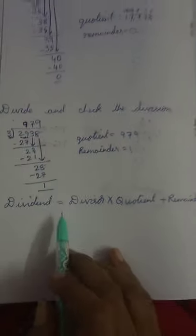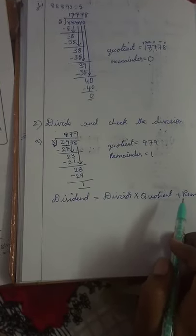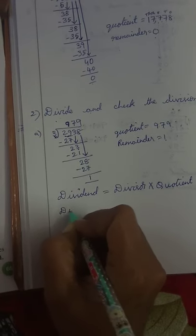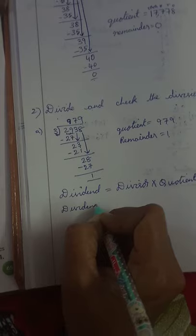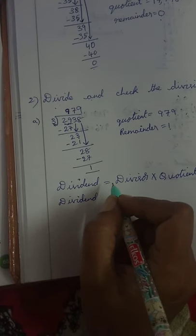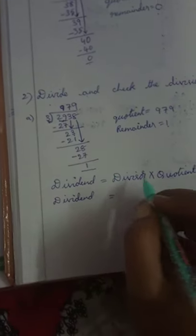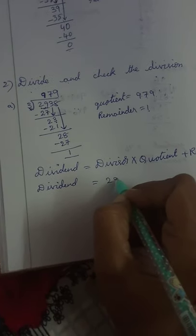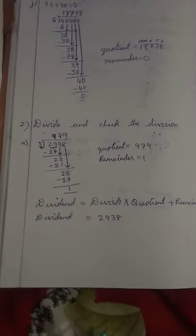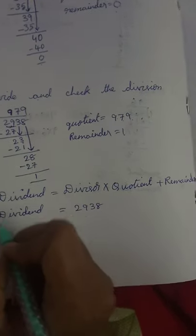So what is the dividend? The dividend is equal to 2938.